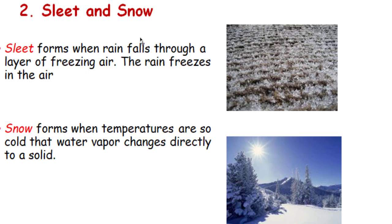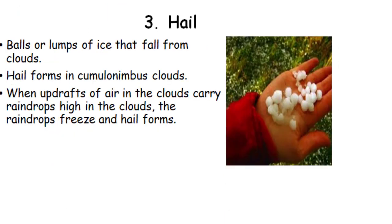Sleet and snow: sleet forms when rain falls through a layer of freezing air — the rain freezes in the air. Water droplets change into ice crystals — that is called sleet. Snow forms when temperatures are so cold that water vapor changes directly to a solid.